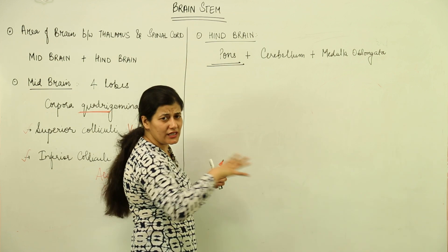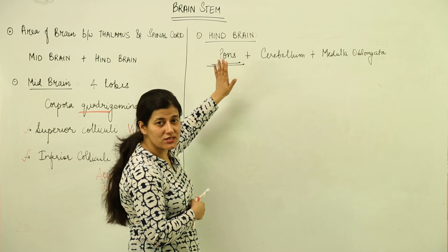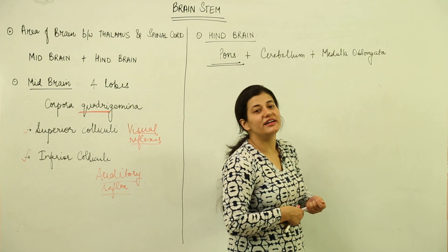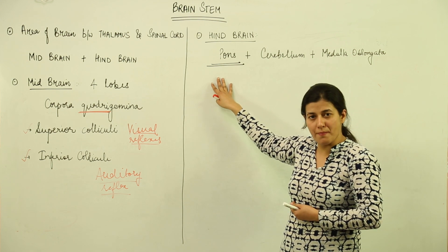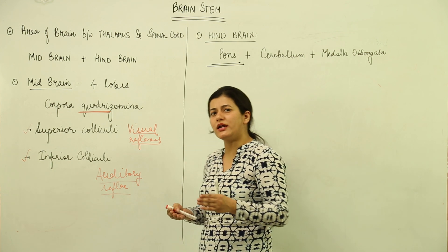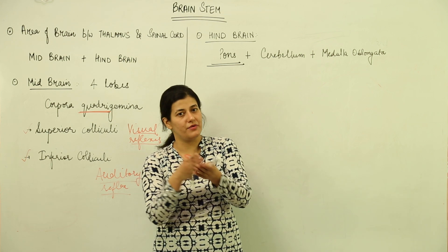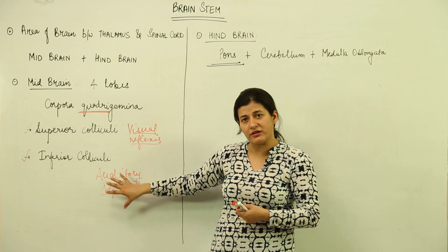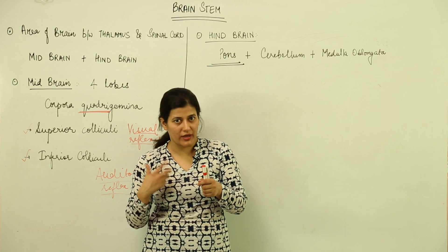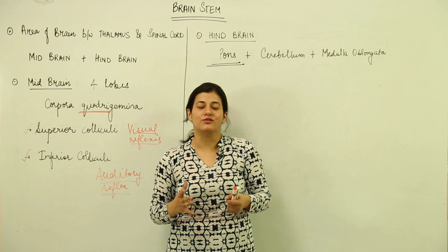Regarding the hindbrain, pons is the base — or floor — of the brain stem and serves as a proper connection for the cerebrum. To summarize: the brain stem is simple to understand. Just remember that pons from the hindbrain and the midbrain are its important components. The midbrain's main functions are controlling visual and auditory reflexes through the colliculi. That is all about the brain stem.